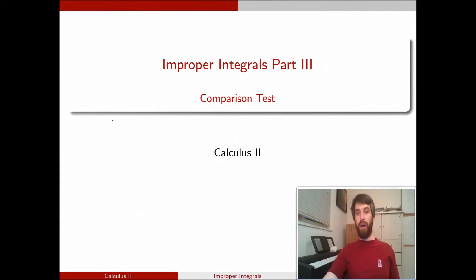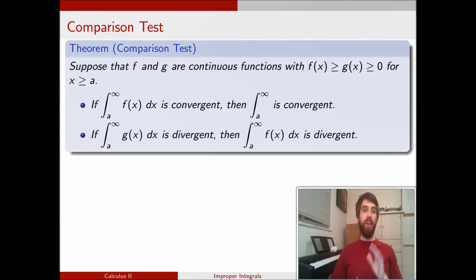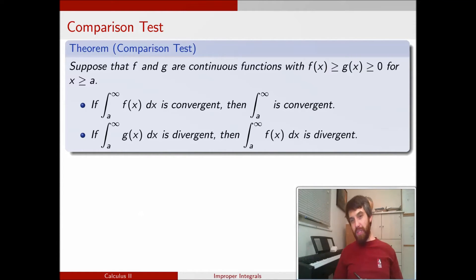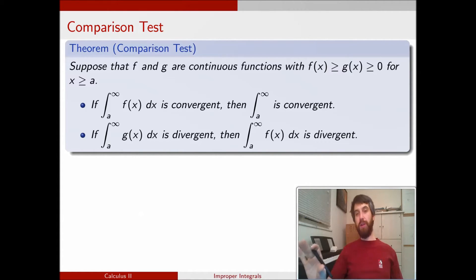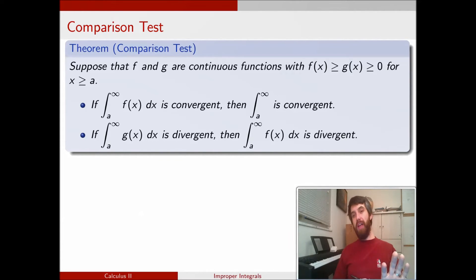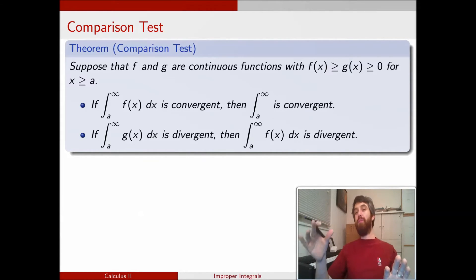The way this is going to work is that we have this theorem called the comparison test. I'm going to do it for the special case where I have one function f that is bigger than some other function g, and both of these are positive. The claim is that if the bigger function converges on some interval, then the smaller function must also converge. Or conversely, if the smaller of the two functions diverges, the bigger one is bigger than something divergent, so the bigger one must also diverge.